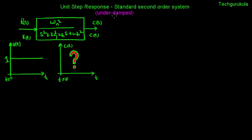In this video, we're going to see the unit step response of a standard second order system for the underdamped case. Here is the system represented by the transfer function, which we're calling the standard second order system. It is supplied with an input in time domain R of t, which is basically a unit step where input is 0 for t less than 0 and 1 for t greater than 0. The underdamped case means when zeta is less than 1.